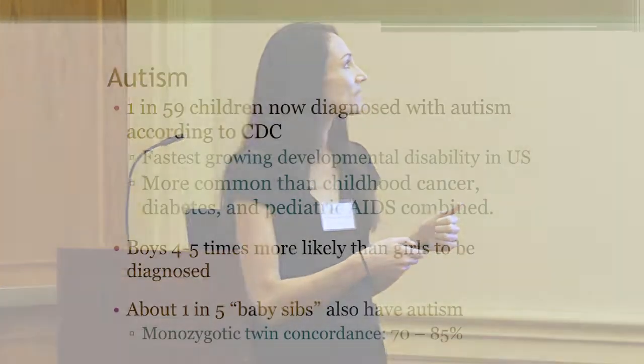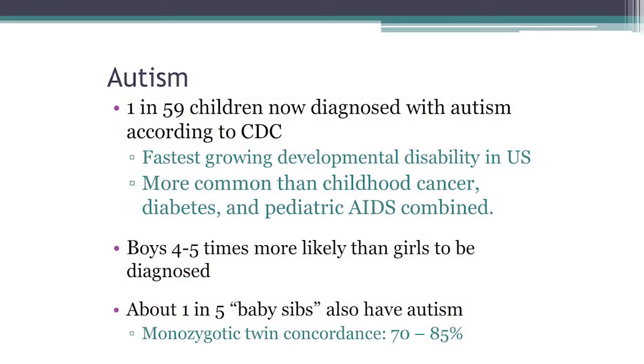Those are three broad categories, but all within autism. It's currently one in 59 children being diagnosed with autism in the United States according to the CDC. This is the fastest growing developmental disability in the U.S. in terms of the numbers — more common than childhood cancer, diabetes, and HIV. This raises the main question on people's minds: why is autism on the rise? Why is it increasing so rapidly?